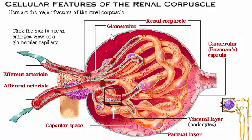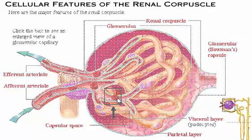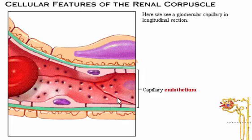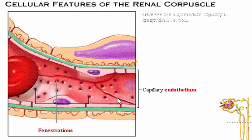Here we see a glomerular capillary in longitudinal section. The endothelial lining shows small openings called fenestrations, which allow for the passage of water and solutes, such as ions and small molecules. You can see the fenestrations more clearly as the capillary endothelium is completed on the screen.